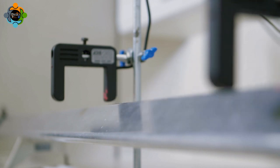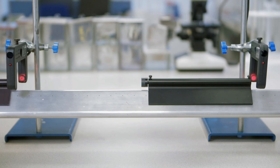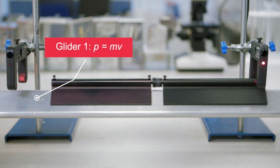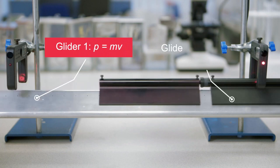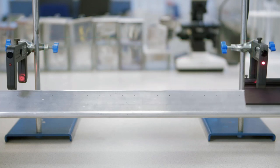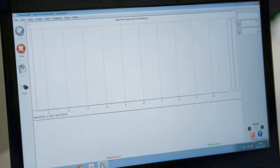In the same way as before, the total momentum is calculated before and after the collision. The total momentum before the collision is equal to the total momentum after the collision. Momentum is conserved in inelastic collisions.